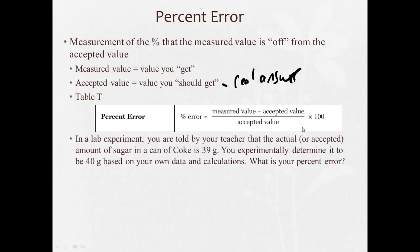So let's do an example. And what I always want to do is, I see here, right? First, I'll read it. In a lab experiment, you are told by your teacher that the actual or accepted amount of sugar in a can of Coke is 39 grams. You experimentally determine it to be 40 grams based on your own data and calculations. What is your percent error? So always, first thing we're going to do is write the formula. Percent error equals measured value minus accepted value divided by accepted value times 100.